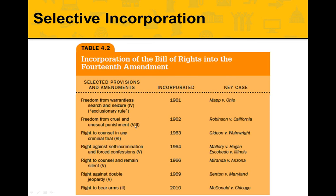Cruel and unusual punishment and the right to counsel were incorporated in the 1963 Gideon case. The Fifth Amendment right to remain silent came with the Miranda case in 1966. The right against double jeopardy was applied to the states in 1969. And as recently as 2010, the right to bear arms under the Second Amendment was incorporated to the states in the McDonald case.